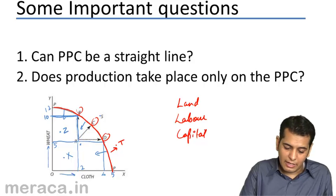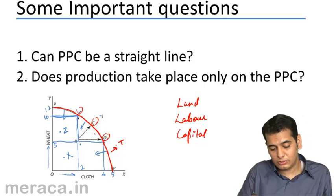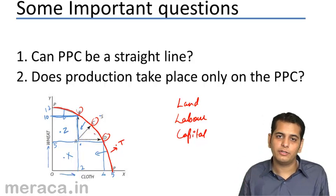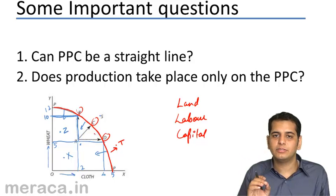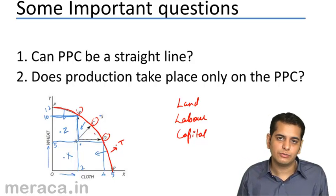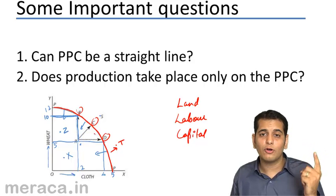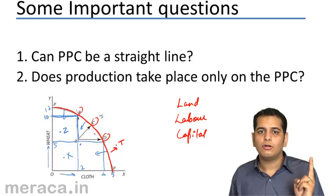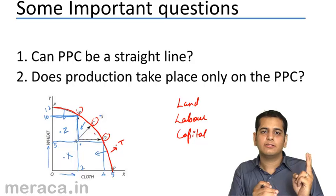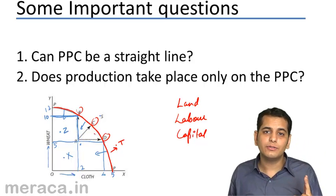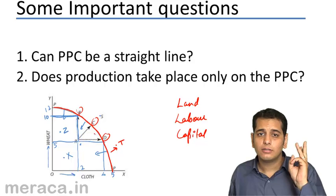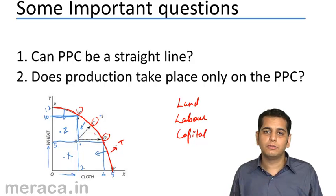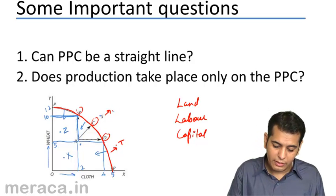Thus, when I am given a PPC, I cannot take a combination beyond it, and all combinations at the PPC are at the optimum level. So there are three inferences from this: First, all combinations at the PPC are at the optimum level of resources. Second, all combinations inside the PPC lead to underutilization of resources. Third, all combinations beyond the PPC are impossible — they are impossible.